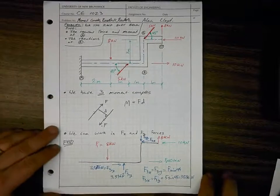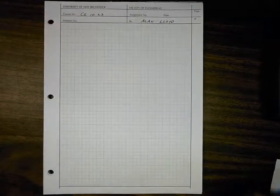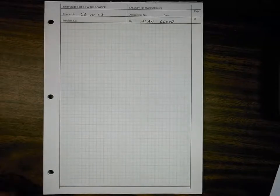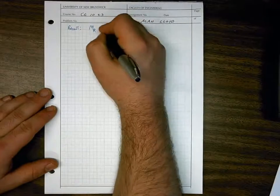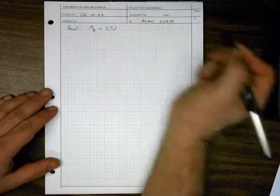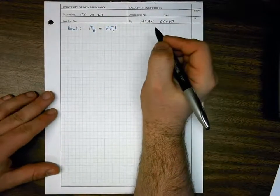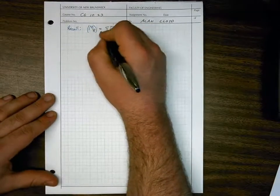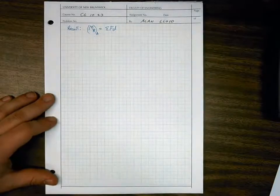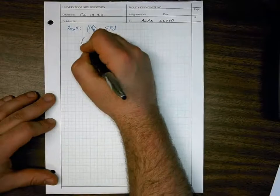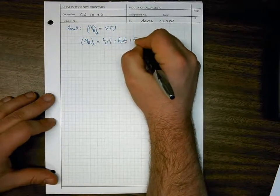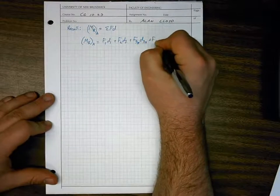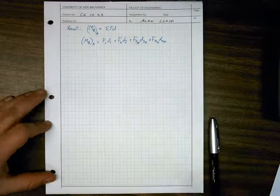Once we have the components, our next step is to get the distances between the three — or now four — moment couples if we consider the Cartesian force components for f3. The moment resultant is simply equal to the sum of force times distance, and this is the same anywhere on the object. For the resultant about point A we write: M_rA = f1·d1 + f2·d2 + f3x·d3x + f3y·d3y.